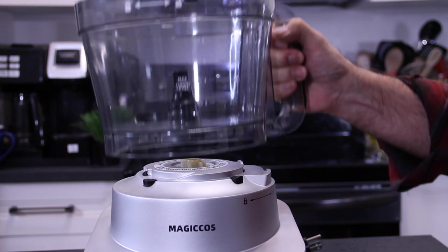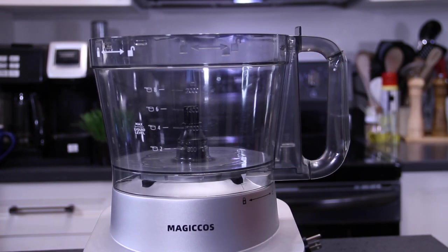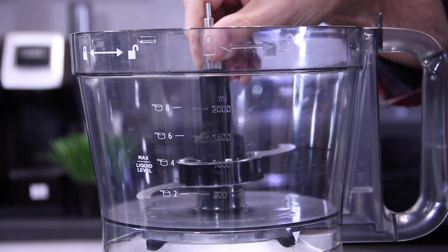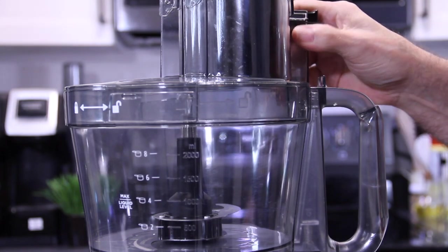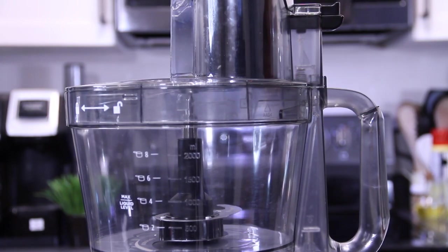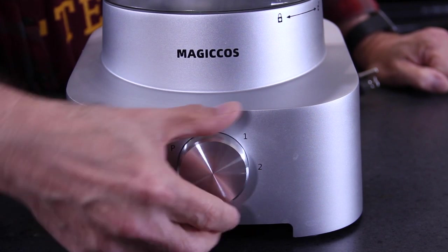Again, reviewing the process we talked about before, put the bowl onto the unit and simply slip it into the lock position. Put the blade and drive shaft over the drive mechanism. Place the top on and lock it down. And set the food processor to low, high, or pulse.